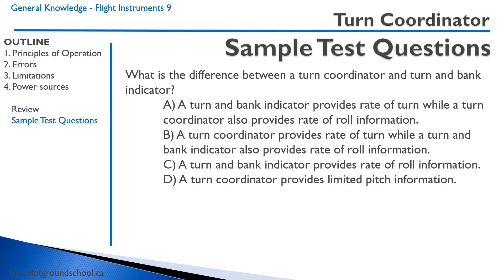We have a sample test question: What is the difference between a turn coordinator and a turn and bank indicator? Answer A: a turn and bank indicator provides rate of turn information, while a turn coordinator also provides rate of roll information. That is correct.